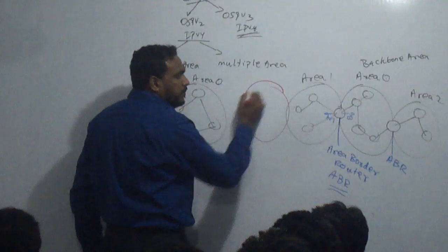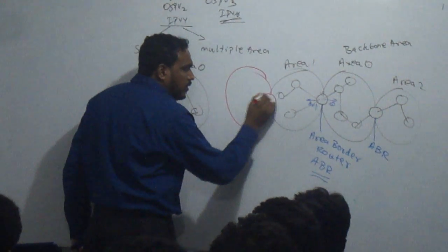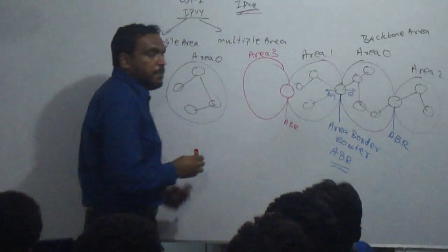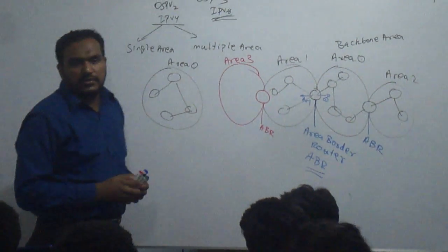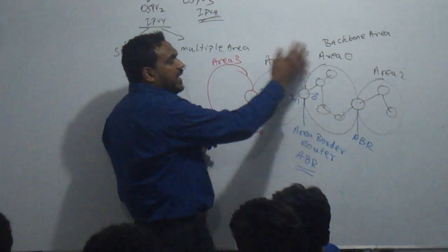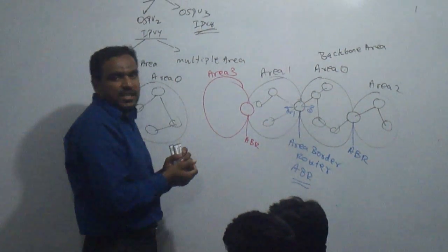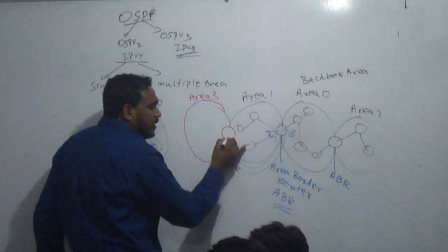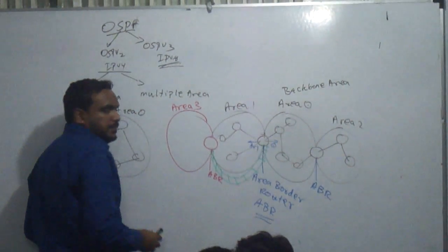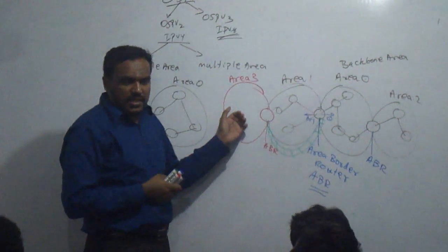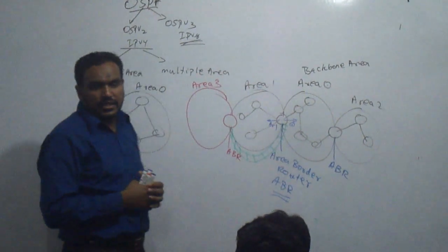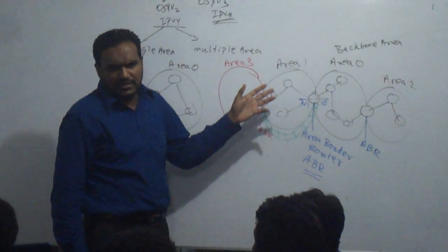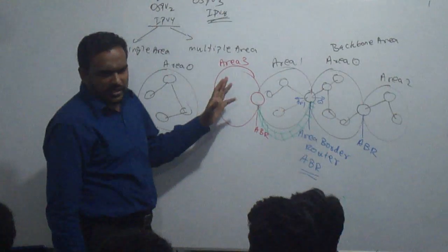Now, if there is another area — say area 3 — connected via an ABR but not directly connected to area 0, it cannot participate in area 0. To solve this, we create a virtual link between area 3 and area 0. To do that, we mostly use a loopback — a logical interface.